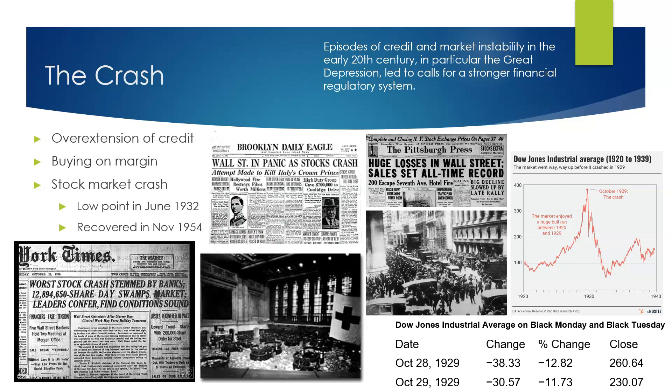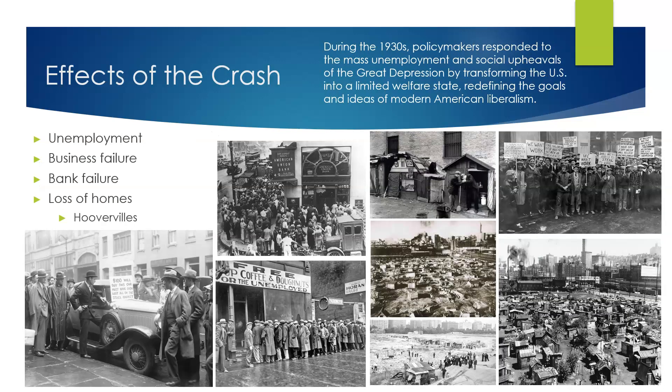The stock market crash of 1929 was not the sole cause of the Great Depression, but it did accelerate the global economic collapse, of which it was also a symptom. By 1933, nearly half of America's banks had failed, and unemployment was approaching 15 million people, or 30% of the workforce. The crash frightened both investors and consumers. Many families lost their life savings. Fear and uncertainty reduced purchases of big-ticket items like automobiles. Businesses like Ford Motors saw demand decline, so they slowed production and furloughed their workers. And again, 30% of the workforce was unemployed by 1933. As more people became unemployed, they spent less on consumer goods, which caused further contraction of the economy, and this cycle just continued.